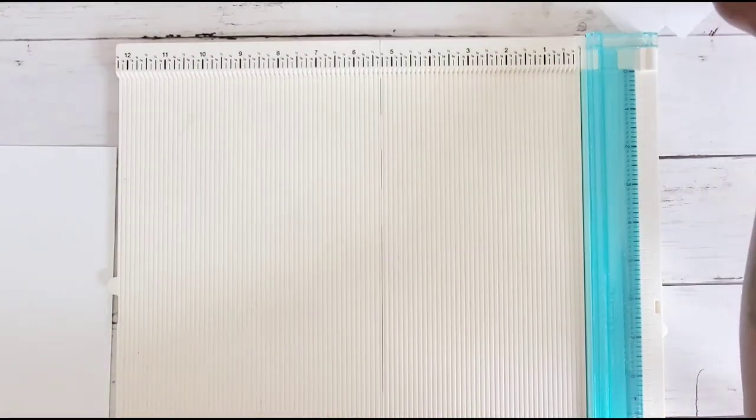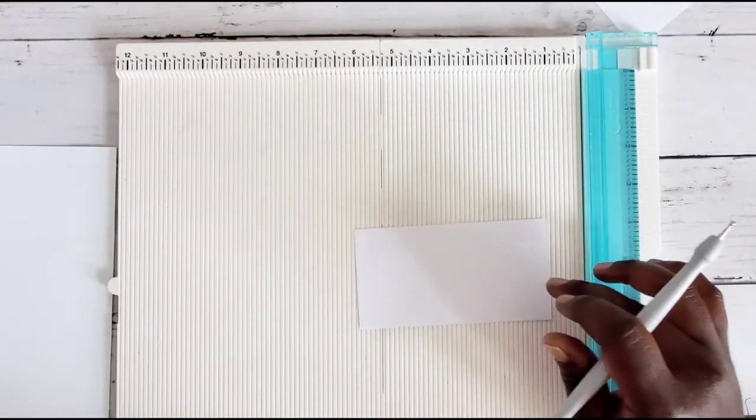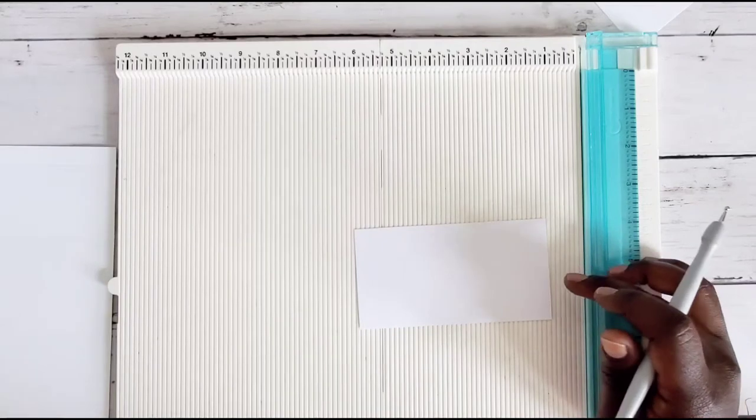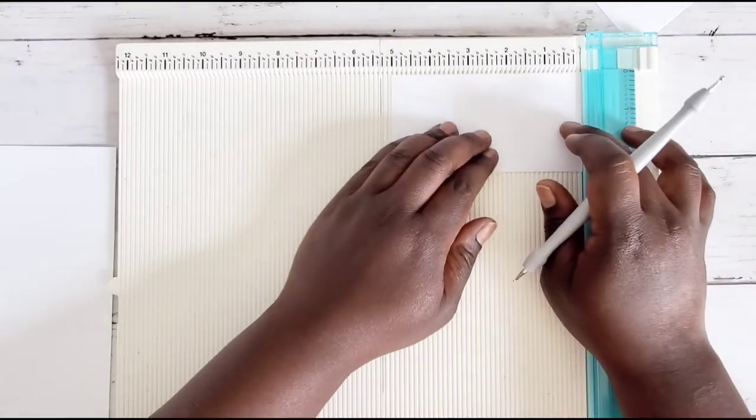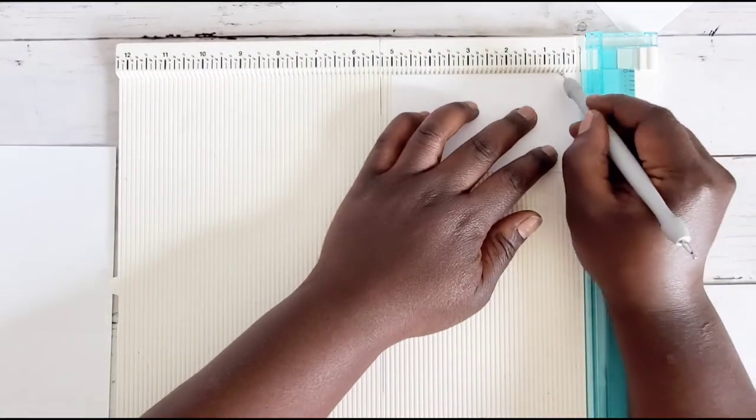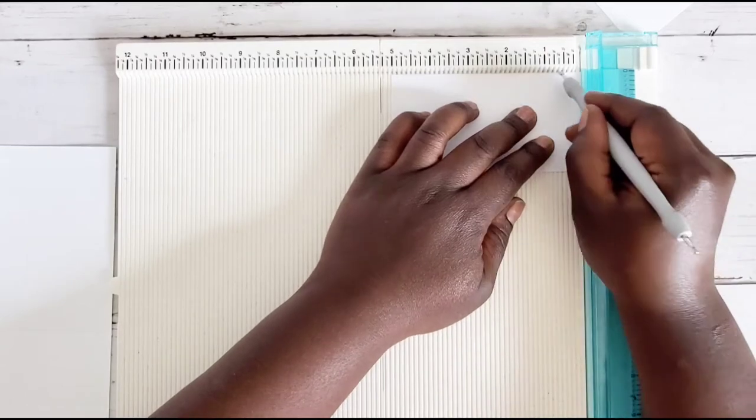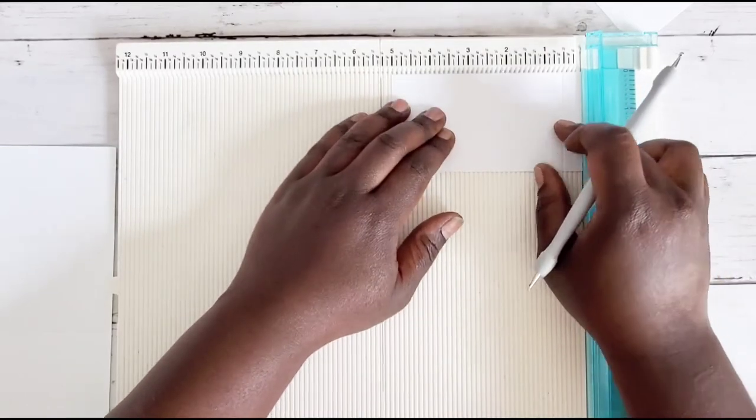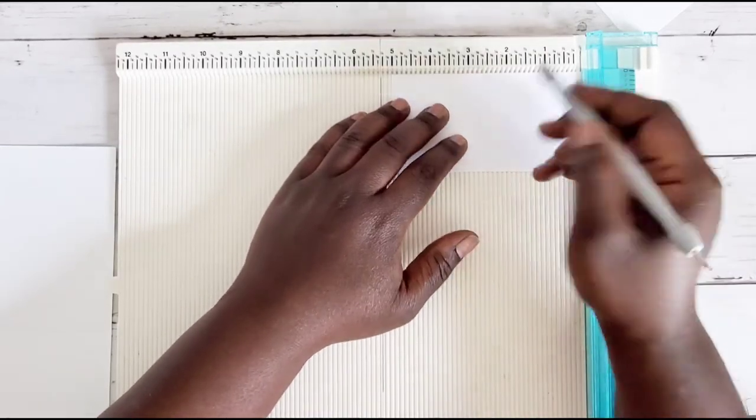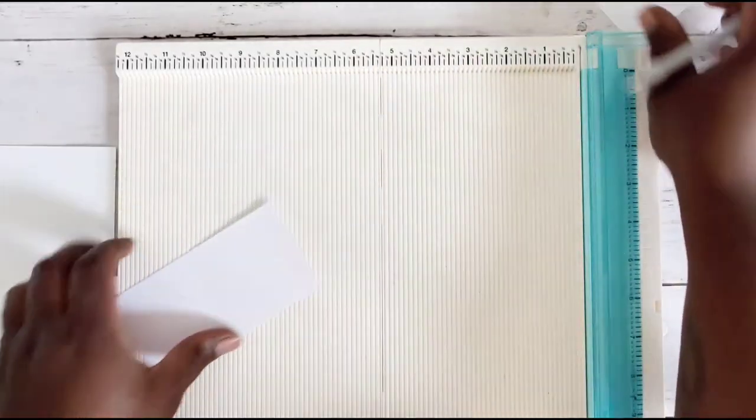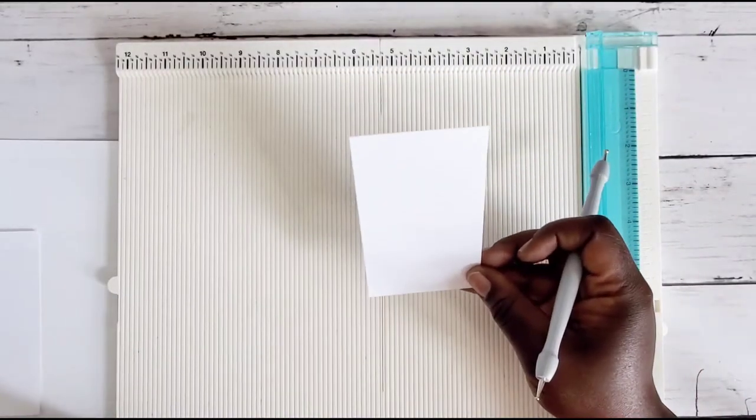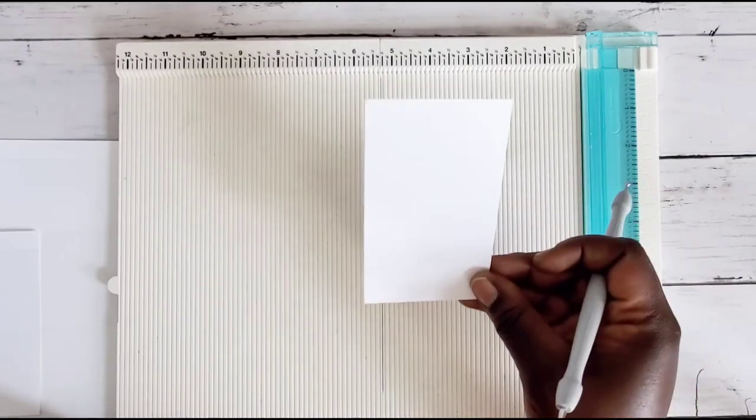Then you're going to need one that measures 2 and five eighths by 5. And on the 5 inch side we're going to score it at half, and then we're going to score at 2 and three quarters.